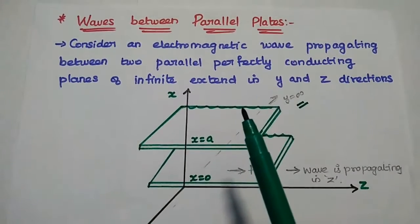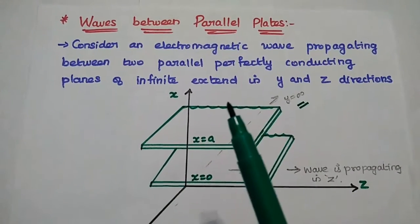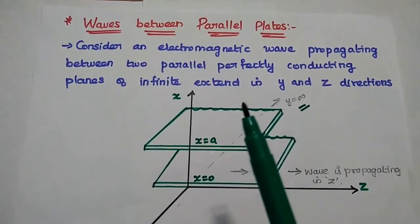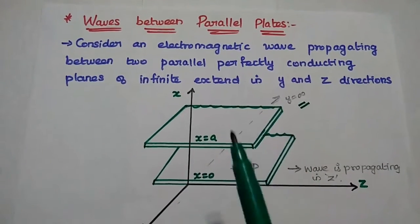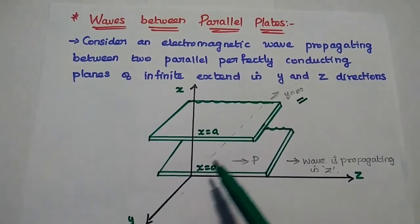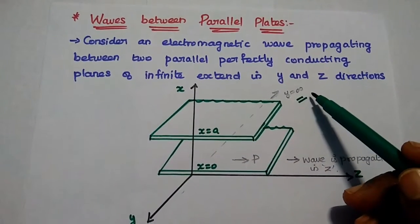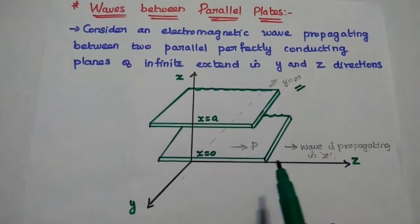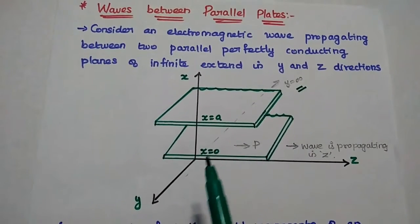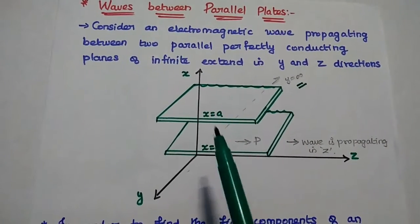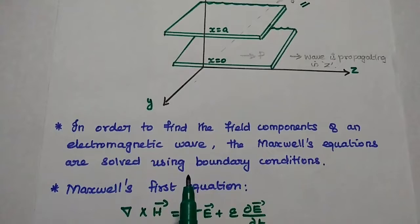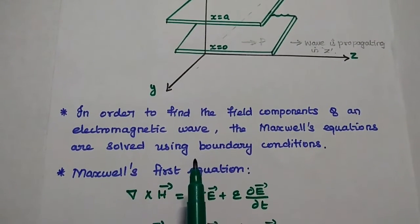Dear students, now we are going to derive the field equations of the electromagnetic waves between parallel planes. We can consider an electromagnetic wave propagating between two parallel perfectly conducting planes of infinite extent in the y direction. The wave is propagating in the z direction, and the planes are placed on the x-axis with the boundary x = 0 to x = a.